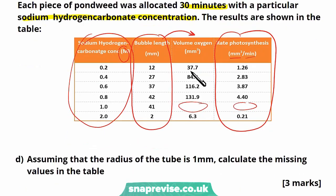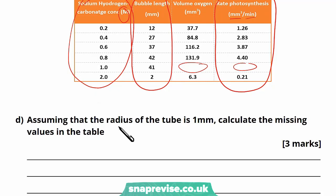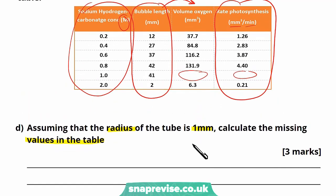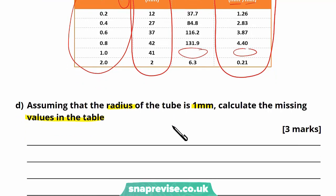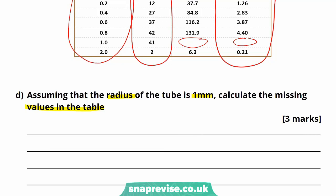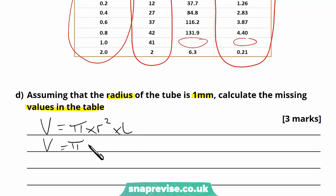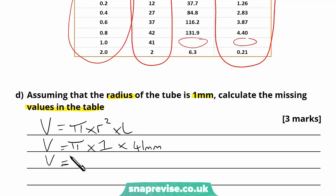Part D says: assuming the radius of the tube is 1 millimeter, calculate the missing values in the table. The first missing value is the volume of oxygen from a bubble that is 41 millimeters long. The volume of a cylinder is π × radius² × length. So the volume is π × 1² × 41, which is π × 41. Putting that into your calculator gives 128.74 mm³. Always remember to include the units.